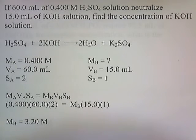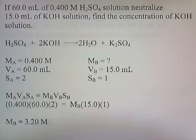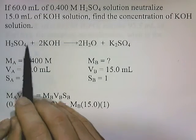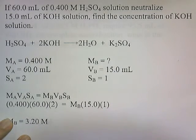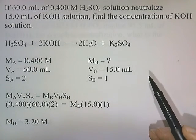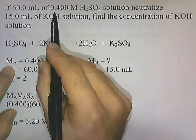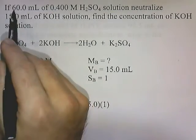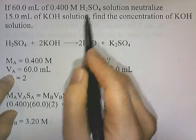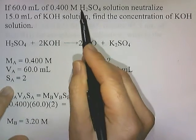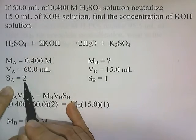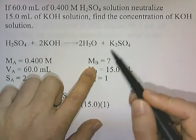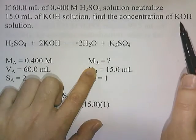Problem: 60 mL of 0.4-molar sulfuric acid neutralizes 15 mL of potassium hydroxide solution. Find the concentration of the KOH solution. The reaction is H2SO4 and KOH forming water and potassium sulfate. MA is 0.4, VA is 60 mL, and SA is 2 (because H2SO4). MB is what we're finding. VB is 15 mL, and SB is 1 for KOH since there's only a single hydroxide.